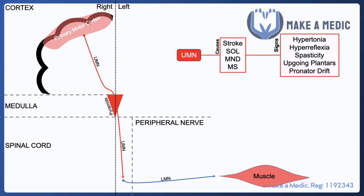The signs of upper motor neuron disease tend to be characterized by excessive tone and excessive reflexes. This is thought to occur due to the interruption of certain descending motor tracts which are able to moderate stretch reflexes. Severing these tracts leads to a massive increase in the amplitude of reflexes, which is why patients will have increased tone, increased reflexes, and a few other signs such as up-going plantars and pronator drift.